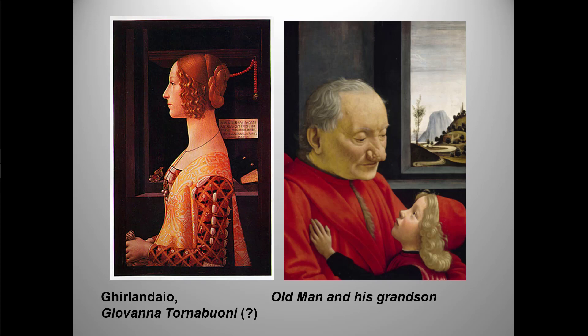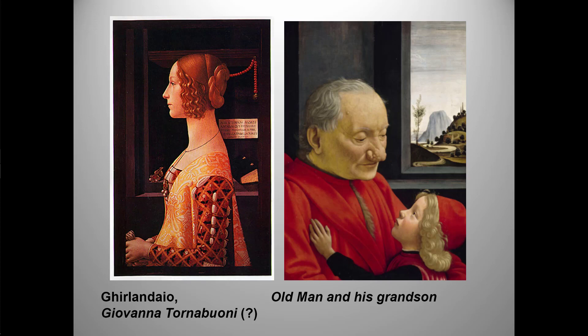Here are two paintings by the Florentine painter Ghirlandaio. Note again how much individual personality even the rather austere profile portrait conveys. Miss Jacobs and I love this painting and wish we could linger. Notice how the painter uses foreshortening, line, and perspective to bring order to this chaotic battle scene, while the diagonal spears add rhythm and energy.